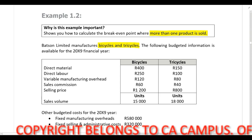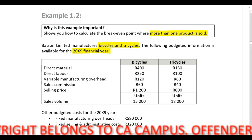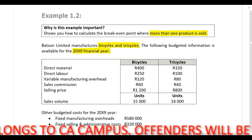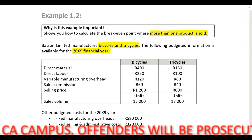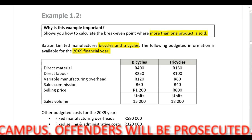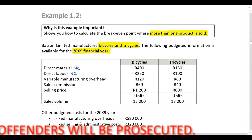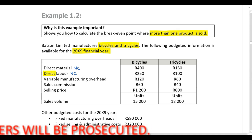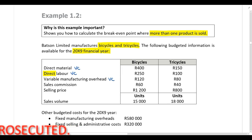The following budgeted information is available for the 20x9 financial year. As we go through the information, let's identify which costs are fixed, which are variable, and which are semi-variable. Direct material is a variable cost, and direct labour is also a variable cost because you've been specifically told that it is. Direct variable manufacturing overheads are obviously variable costs.